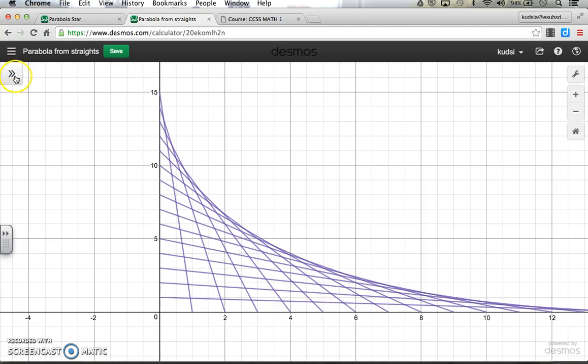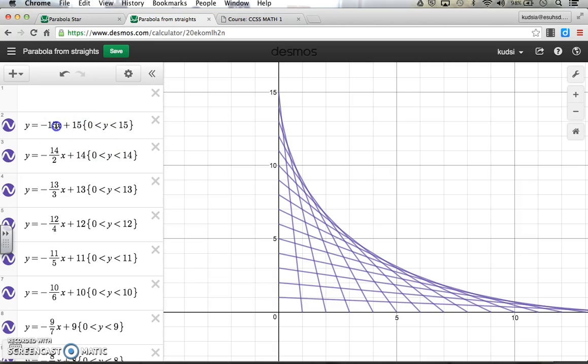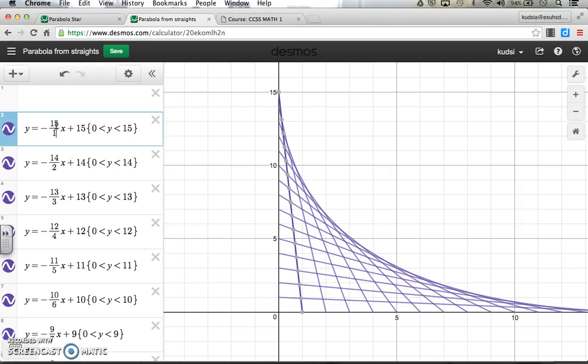So in terms of the slope, the first one's 15 over 1, then it's 14 over 2, then 13 over 3, and then 12 over 4, and then 11 over 5, and then 10 over 6, and so on.